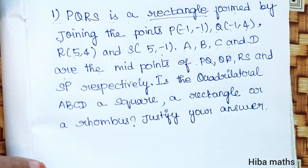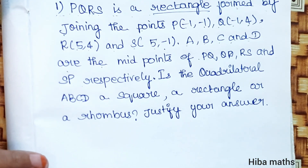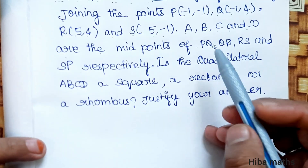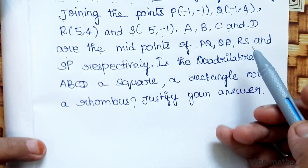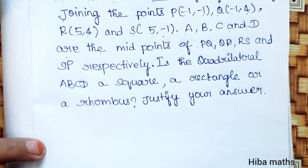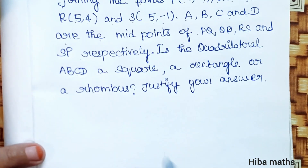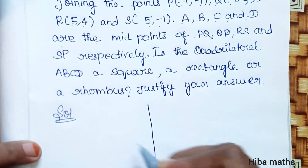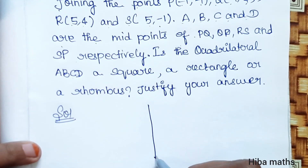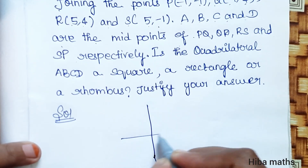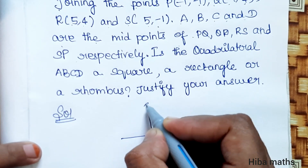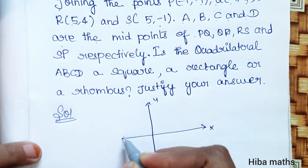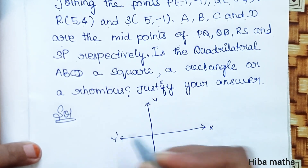So the question: PQRS is a rectangle, and points A, B, C, D are the midpoints of the sides. This is a graph with x and y axes. We can write the coordinates: P is at (-1, -1).